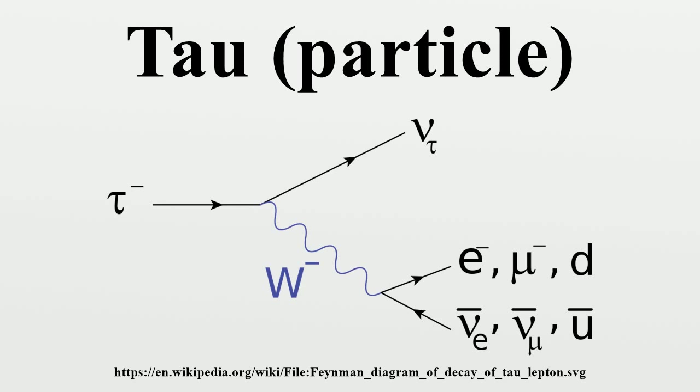Tau leptons have a lifetime of 2.9 times 10 to the minus 13 seconds and a mass of 1776.82 MeV/c². Since their interactions are very similar to those of the electron, a tau can be thought of as a much heavier version of the electron.